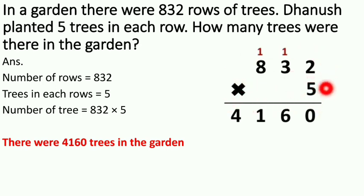Then 2 times 5 is 10. So here is 0 and 1 is carry. Then 3 times 5 is 15, 15 plus 1 is 16. So write down here 6 and 1 carry. Then 8 times 5 is 40, 40 plus 1 is 41.